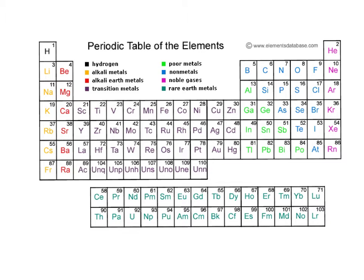Going across, our horizontal rows are called periods. We have 1, 2, 3, 4, 5, 6, 7 periods. They are called periods because patterns repeat periodically over and over again in each row.